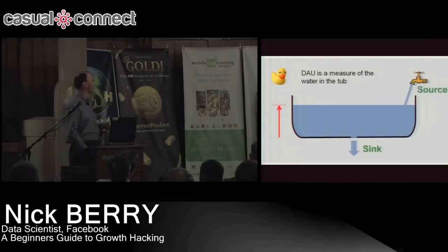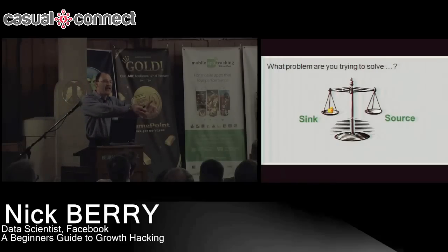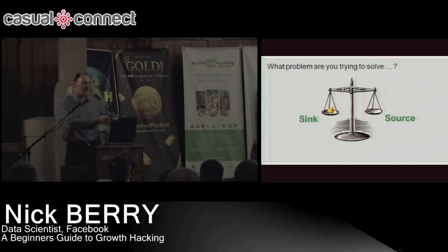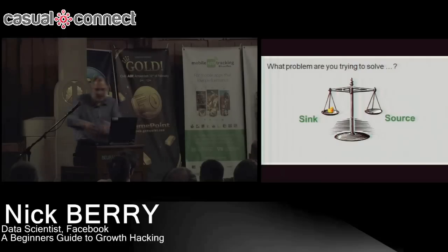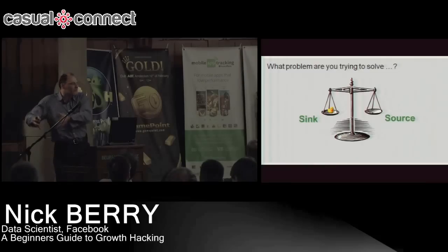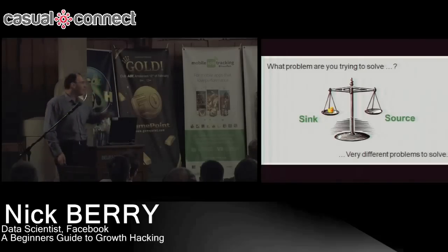What problem are you trying to solve? Imagine: Game A has a million DAUs today and a million tomorrow. Game B has a million DAUs today and a million tomorrow. Game A is fantastically sticky — all million users return the next day, but the acquisition team is weak. Game B — the game isn't great, but the user acquisition team is knocking it out of the park, delivering a fresh million eyeballs every day. Both have the same DAUs, but they're two very different problems. By focusing only on daily active users, you're missing the entire picture.